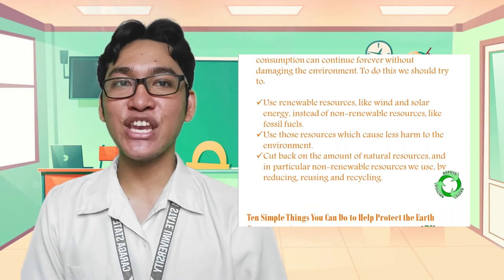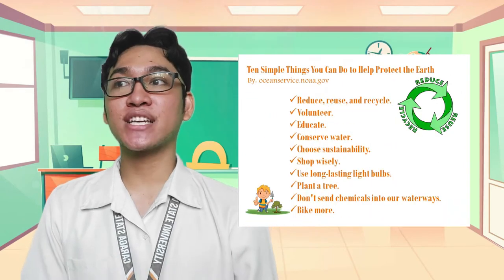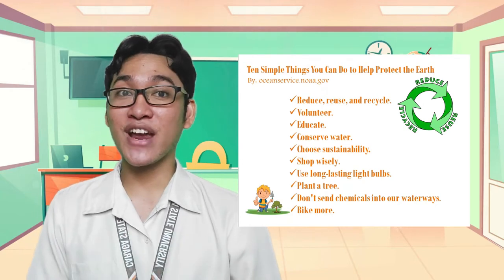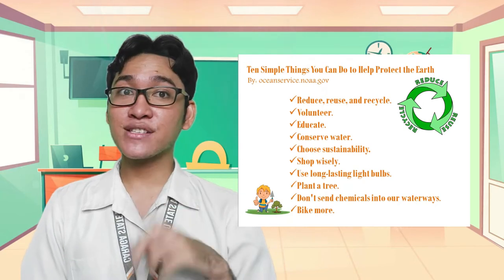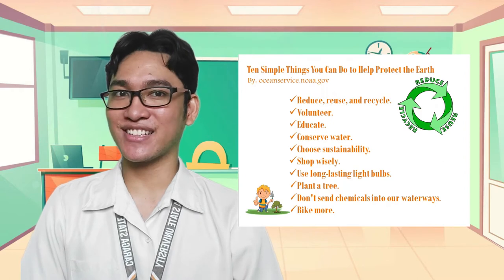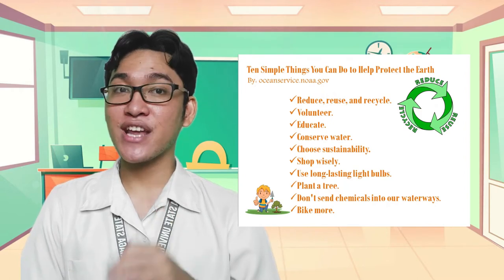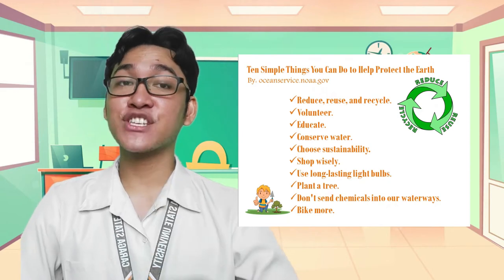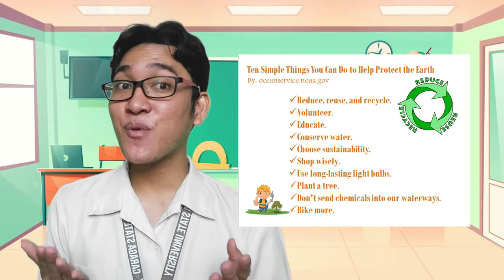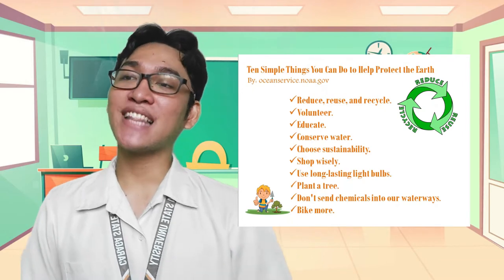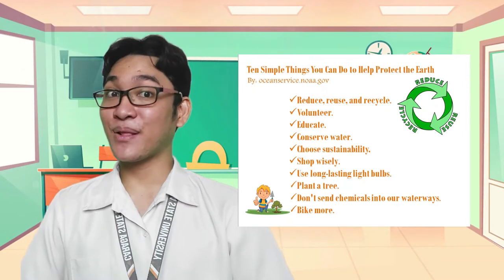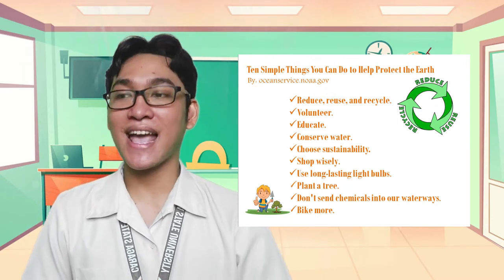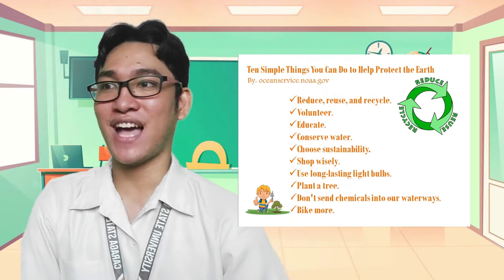According to oceanservice.noaa.gov, there are 10 simple ways that you can do to help protect the earth and the resources we have right now in the Philippines. First, reduce, reuse, recycle. Second, volunteer. Third, educate. Fourth, conserve water. Fifth, choose sustainability. Sixth, shop wisely. Seventh, use long-lasting light bulbs. Eighth, plant a tree. Ninth, don't send chemicals into waterways. And lastly, bike more and drive less.